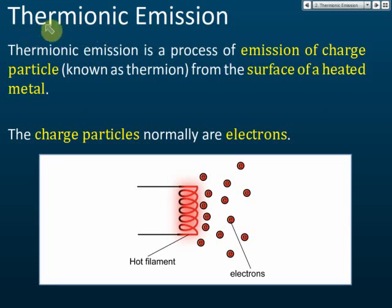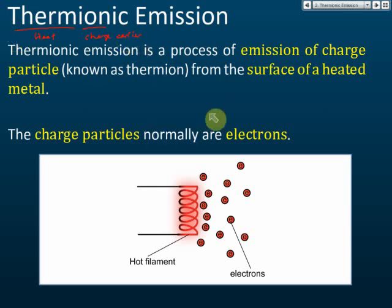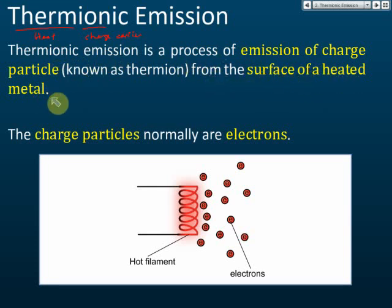Thermionic emission comes from the words 'thermo' — meaning heat — and 'ion,' which is a charge carrier. In this case, the charge carrier is the electron. So thermionic emission is the process of emission of charged particles from the surface of a heated metal. These charged particles are known as thermions, which are electrons.